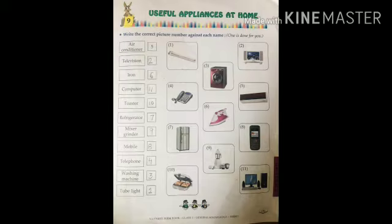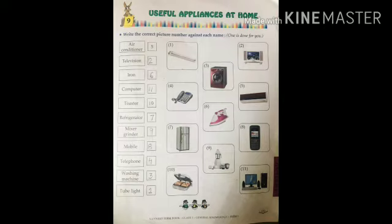Next one is a toaster. Children, we use toasters to toast bread and sandwiches. In front of toaster write down number ten. Next one is a refrigerator — you can see it is number seven in this picture, so write down number seven. Next one is a mixer grinder — write down number nine. Next one is a mobile — you can see mobile is number eight, so write down number eight.